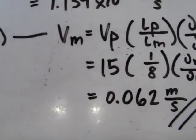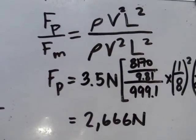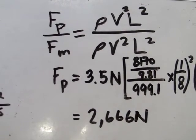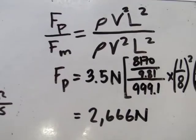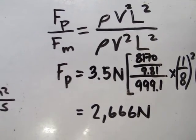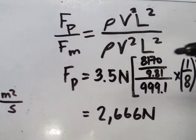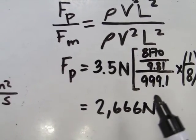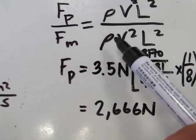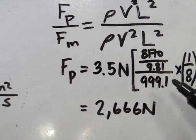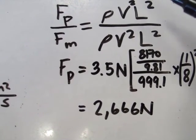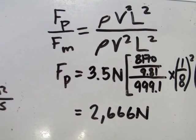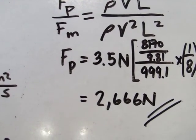Next, the problem also requires us to find the force of the prototype. The predominant force here is the inertial force, so we use the equation for inertial force: Fi equals density times V squared times L squared. We take the ratio of the prototype to the model to find the force of the prototype given the force of the model. Rearranging to isolate F_p: it equals 3.5 newtons multiplied by the density of the prototype over the density of the model, times the linear dimensions of the prototype over the model squared, times the velocity ratio squared. After computing, we get 2,666 newtons.